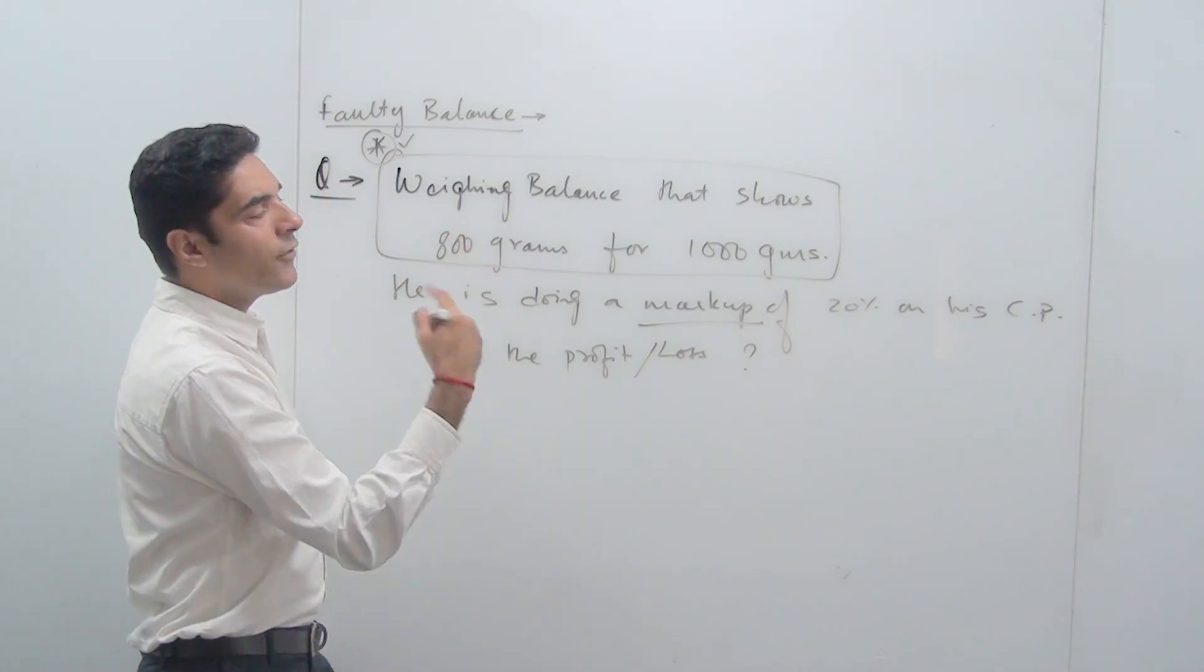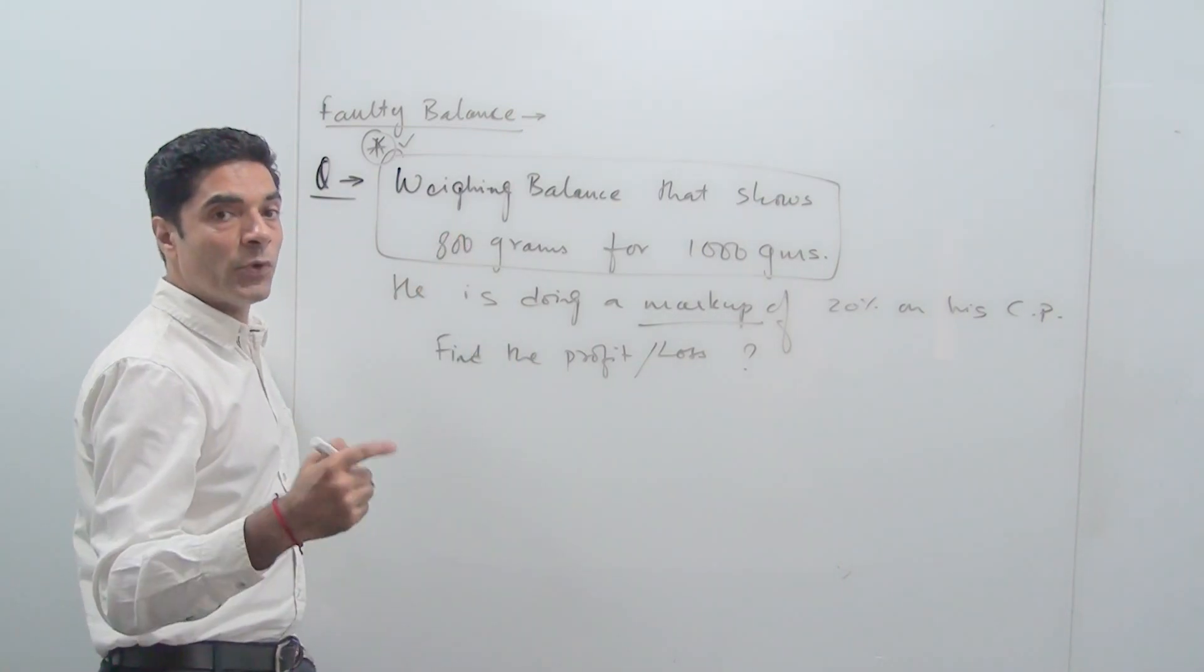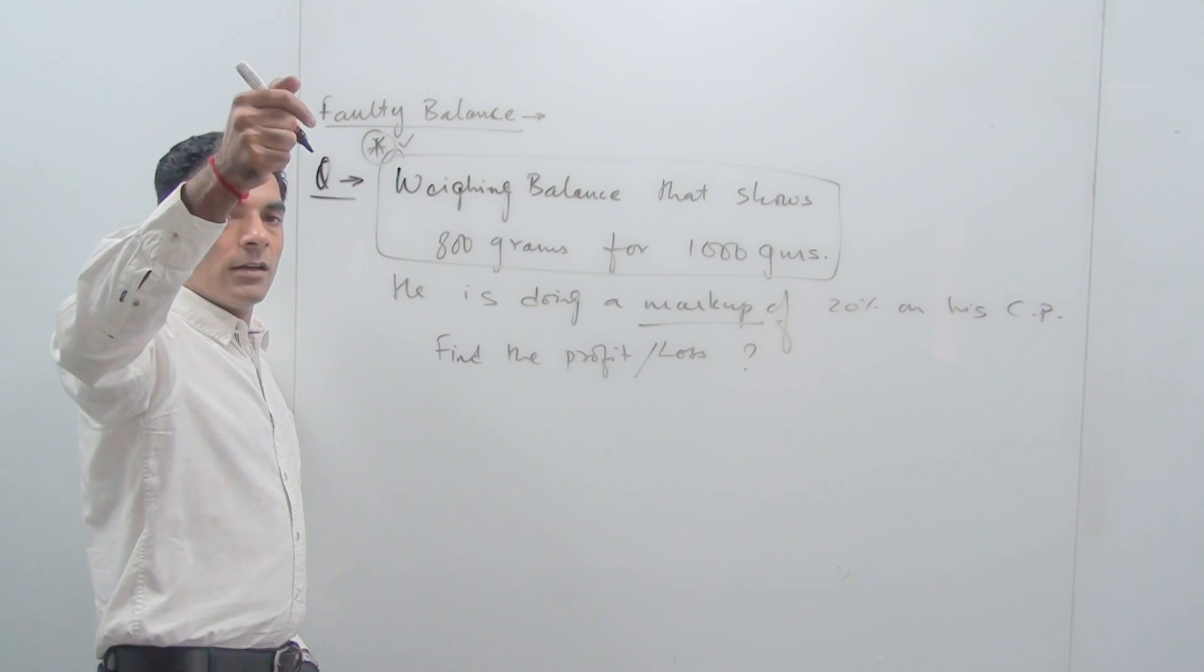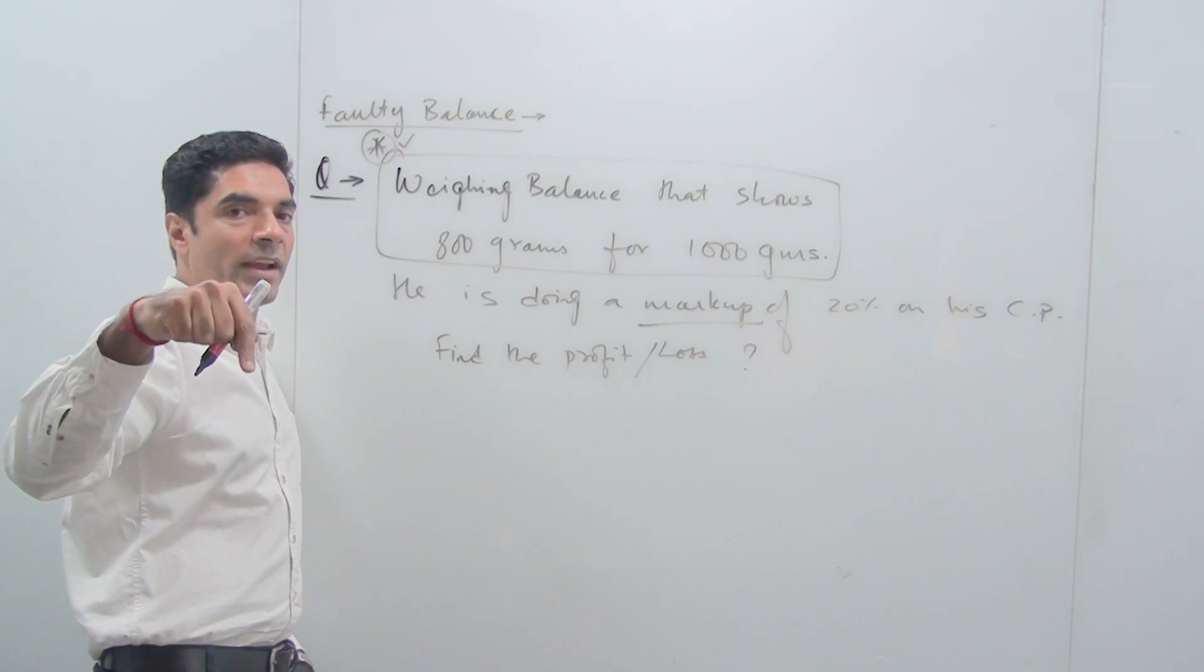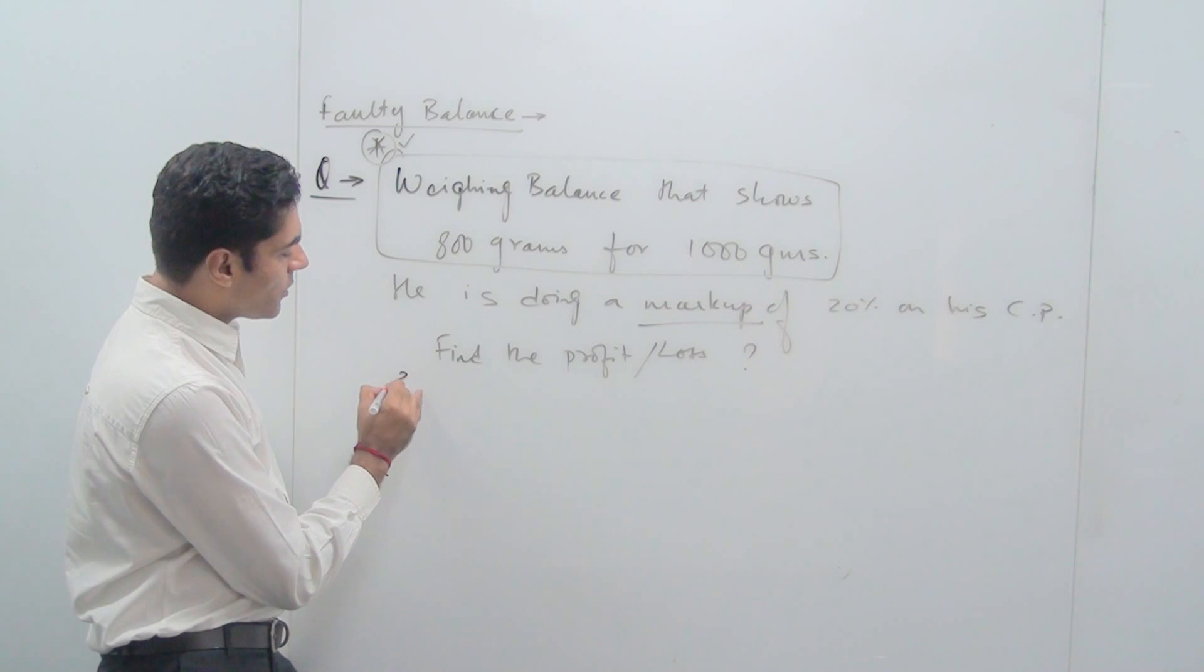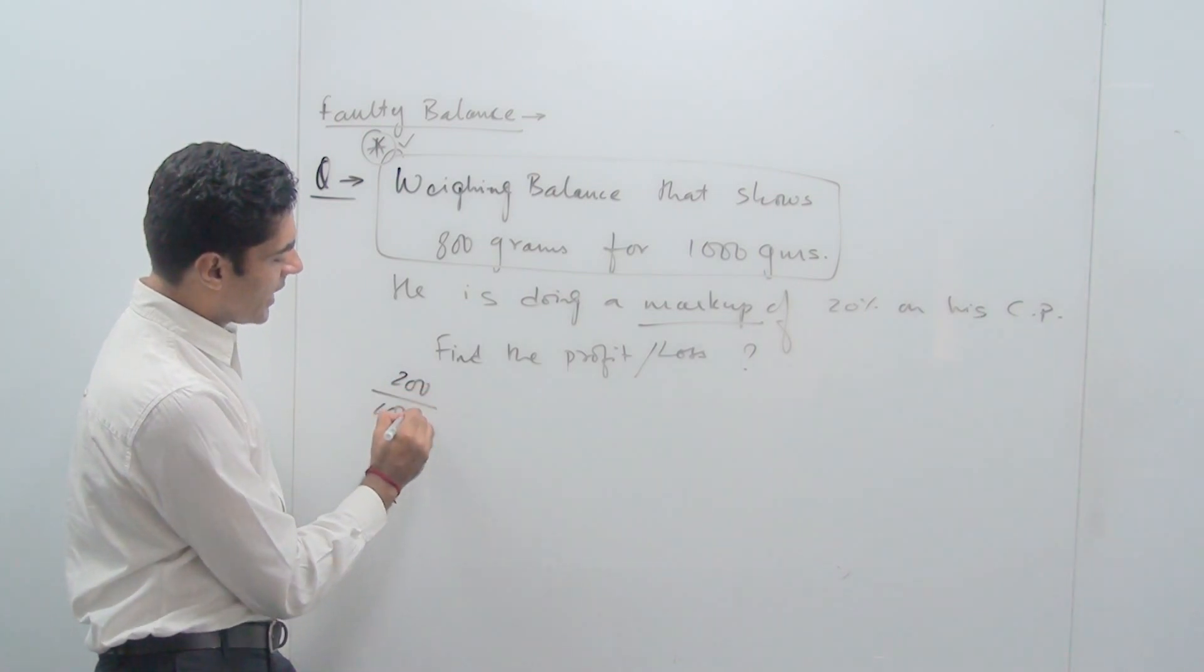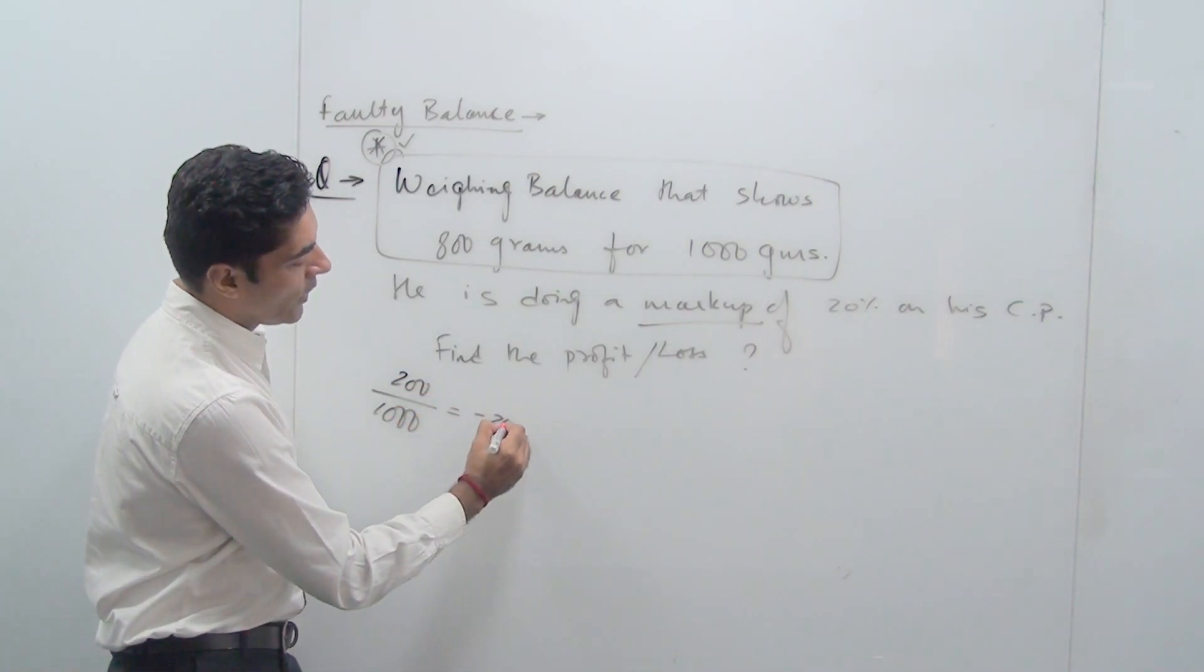It is showing 800 for 1000, that means shopkeeper is putting 1000 but the weighing balance is displaying 800. So the customer will pay for 800, that means there is going to be a loss of 200 grams on the base of 1000 grams, which means there is a loss of 20%.